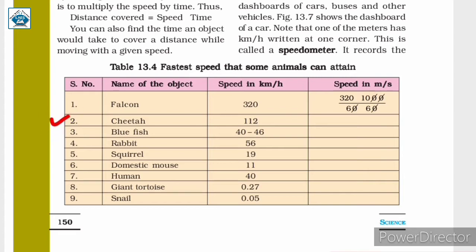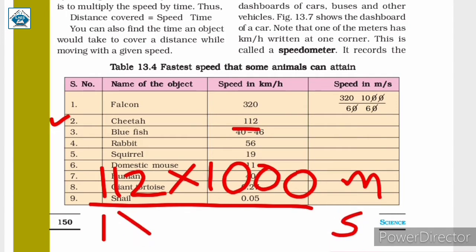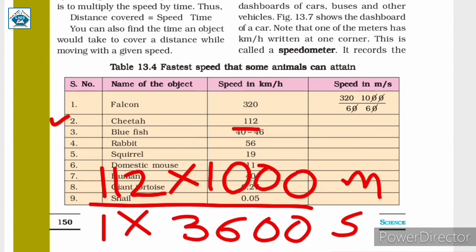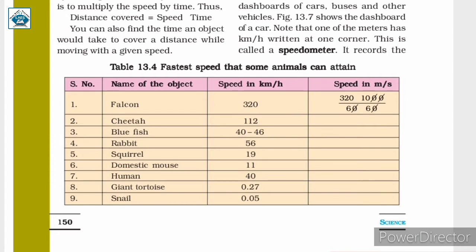The speed of the cheetah is approximately 31.1 meters per second. In the same way, you can convert the speeds of other living organisms — such as bluefish, rabbit, squirrel, etc. — from kilometers per hour to meters per second.